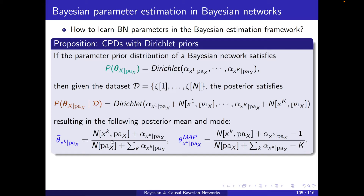The only difference is that here we have N of xk and its parents in the numerator and just the parents in the denominator — this is just the MLE case. For the posterior mean we have alpha hyperparameters, and for the MAP or the mode we have the alpha minus ones.